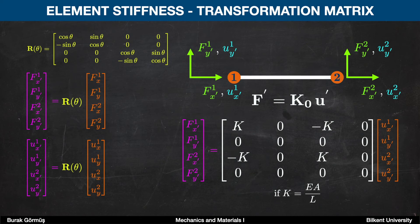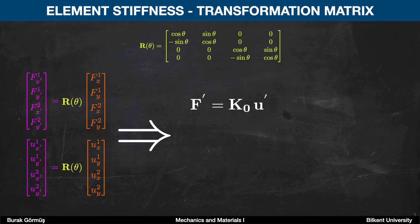You may observe that this formulation leads to the same equation mentioned for a system in its local coordinate system. Now, the last step is to convert everything to the global xy coordinate system. As said, f' is equal to K0 multiplied by u'. As you can see on the left, f' equals the transformation matrix multiplied by f, and u' equals the transformation matrix multiplied by u. As a result, we obtain this equation.